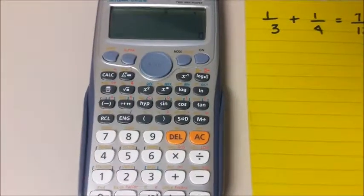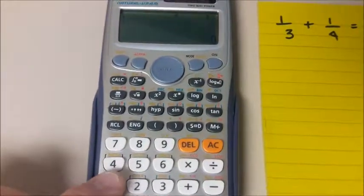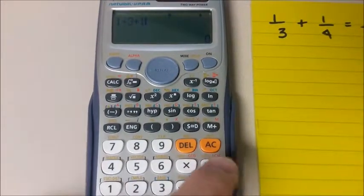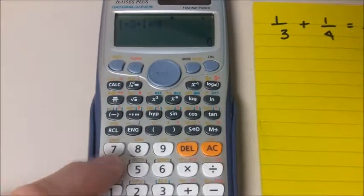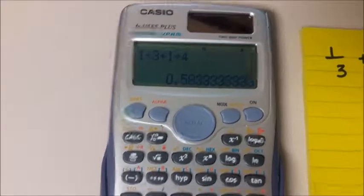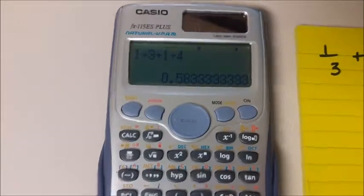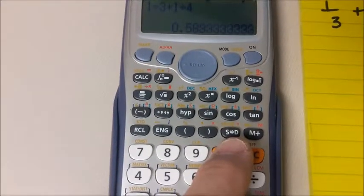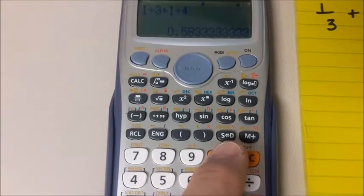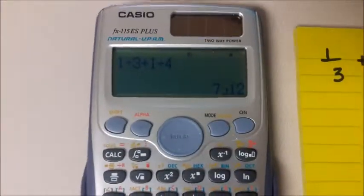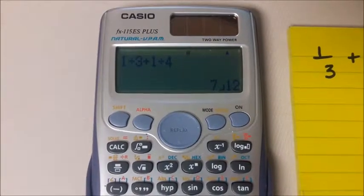Casio scientific calculator. So we will do 1 divided by 3 plus 1 divided by 4. And there is the decimal approximate. So on this calculator the button is right there, it says s to d or d to s, so I think that means standard to decimal or decimal to standard notation. All you have to do is just press that one, and it gives you the fraction format, 7 over 12.